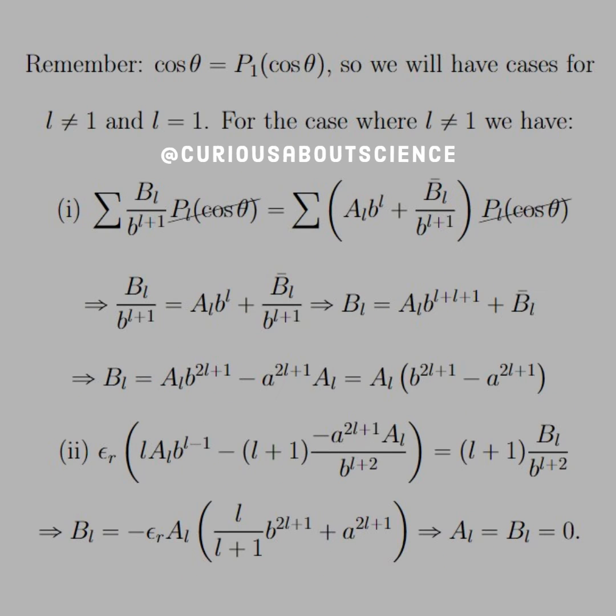Going back to our trusty friend, orthogonality, we know that cosine theta is equal to P1 of cosine theta, the Legendre polynomials. And so we'll have two cases to consider, L not equal to one and L equal to one. For the case where L does not equal one, we can modify equation one and two as such. But all that proves is that capital AL and capital BL equals zero. As you can see, cancellations, substitutions, the only way that's possible for these two equations to be consistent is if AL and BL both equal zero. Which then makes sense based on what we know from a couple questions ago in the Legendre polynomials.